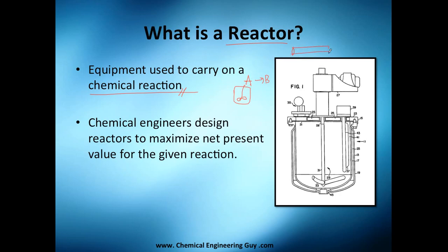Even a pipe can technically be a reactor if it's transforming A to B, though we don't want that — we want pipes to transport material only. Essentially, any device or equipment that carries out a chemical transformation is a reactor. Chemical engineers design reactors to maximize net present value for a given reaction.